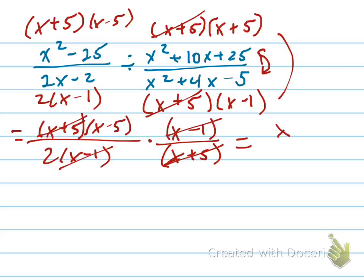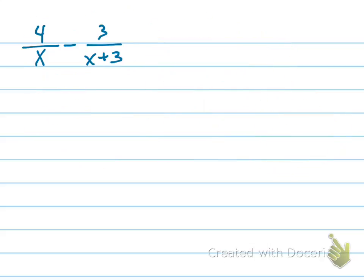And now I can cancel x plus 5, x minus 1. And how nice is this? x minus 5 is left on the top. 2 is left on the bottom. There's your answer. Again, check by plugging in some numbers.